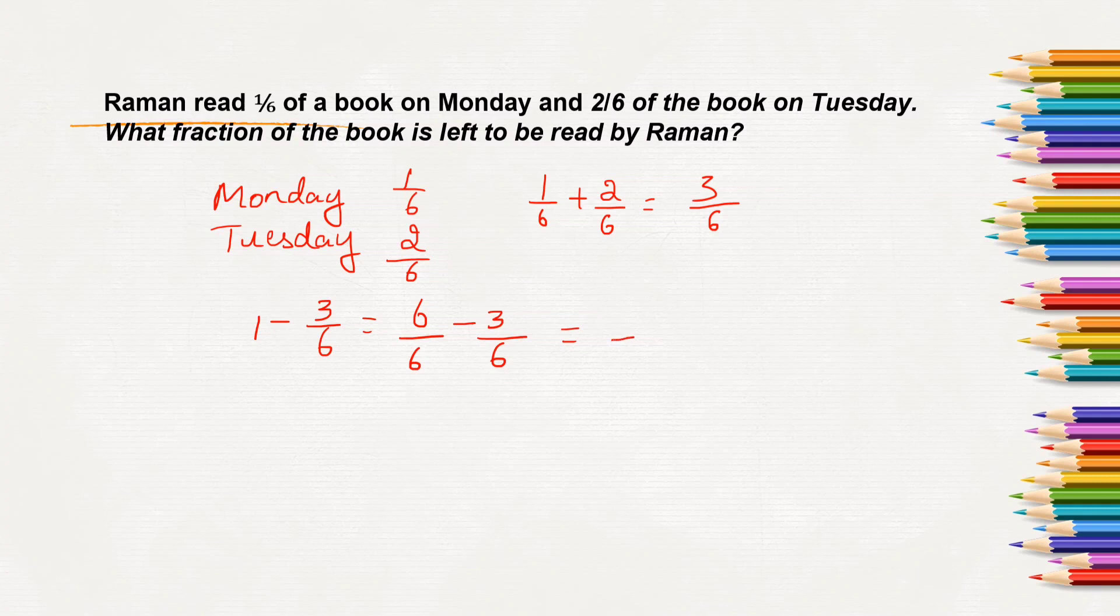Denominators are same. So 6 will remain as 6 itself. And here, 6 minus 3 will be 3. 3 by 6 is nothing but just simplify. So that it will be 3, 1 times will be 3, 2 times 6. So 1 by 2.